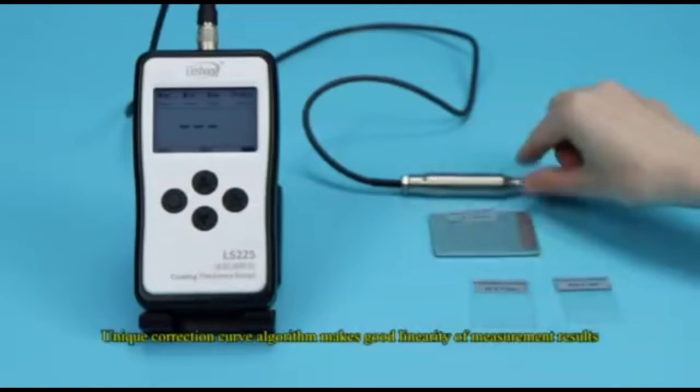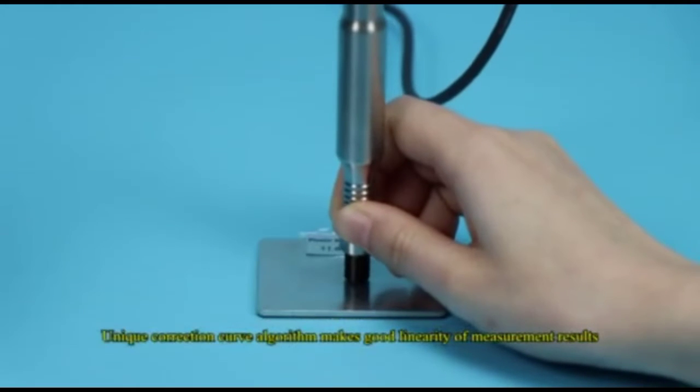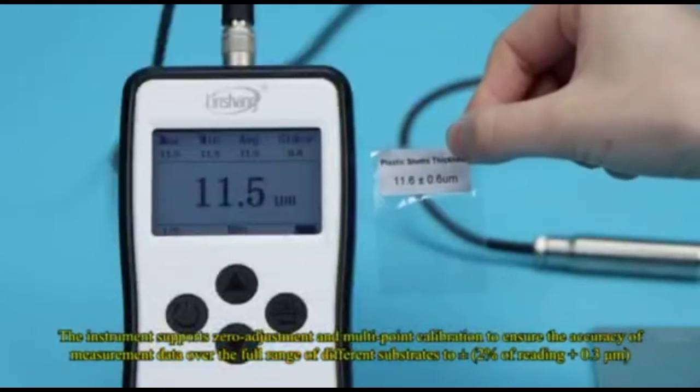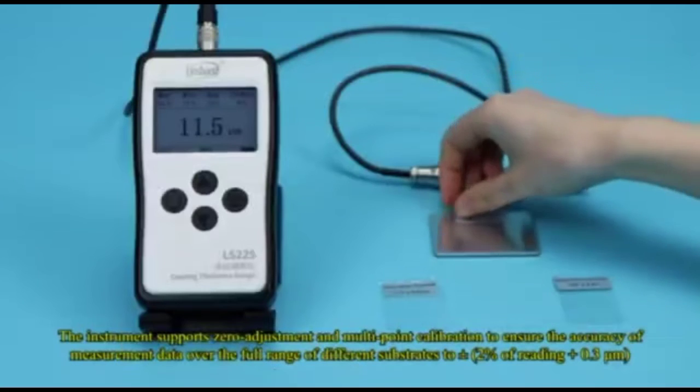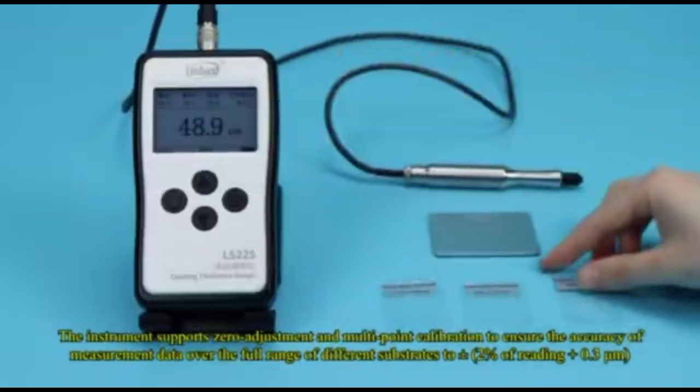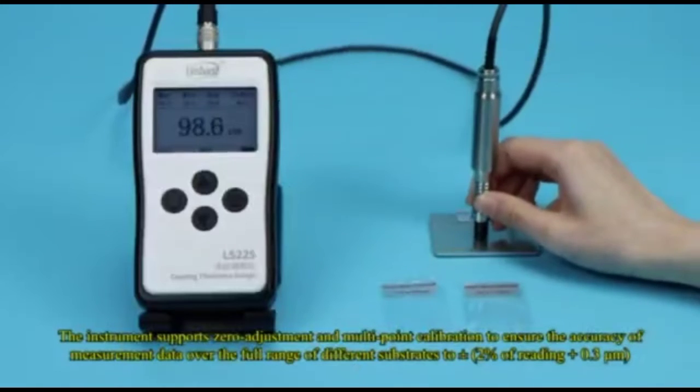Unique correction curve algorithm makes good linearity of measurement results. The instrument supports zero adjustment and multipoint calibration to ensure the accuracy of measurement data over the full range of different substrates to plus or minus 2% of reading plus 0.3 micrometers.